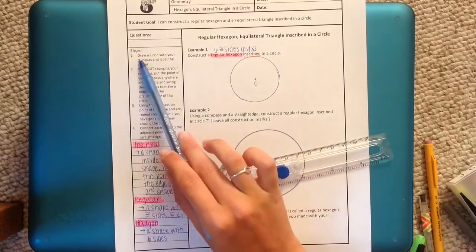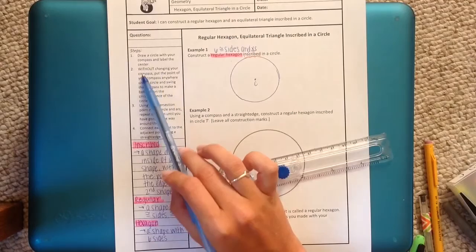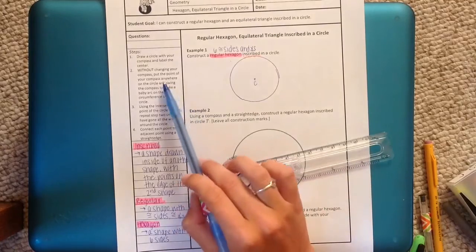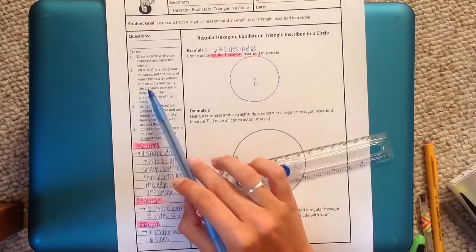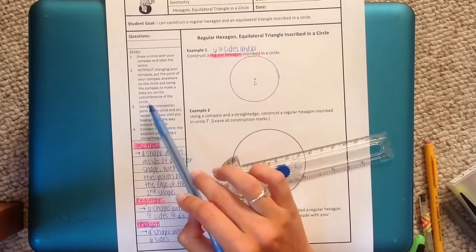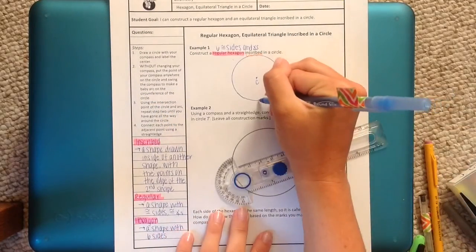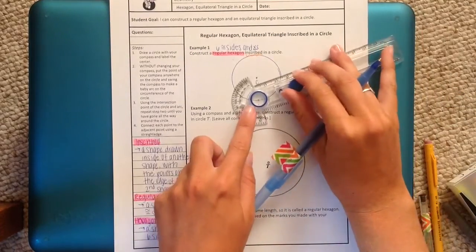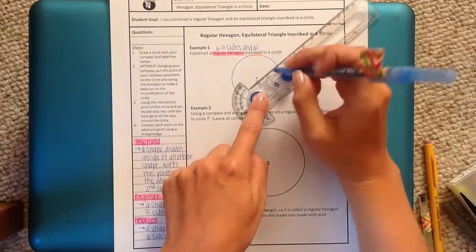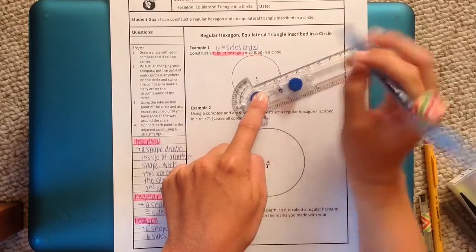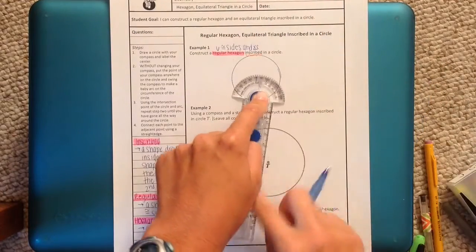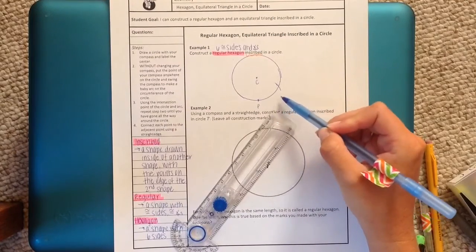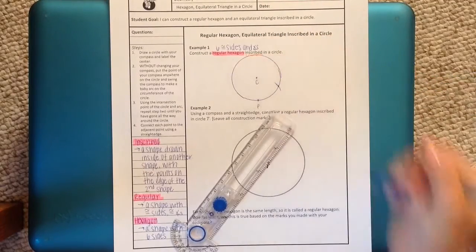So it says step one was to draw a circle with the compass and label the center. Then it says without changing your compass, meaning don't move the center or don't move the radius. Put the point of your compass anywhere on the circle and swing the compass to make a baby arc on the circumference of the circle. Okay, let's break that down. We need a point on our circle. I'll say P, P for point. I'm going to put my center on that point. And I'm going to swing a baby arc, meaning a small tiny little arc. This is just a little baby arc on the edge or the circumference of the circle. And so from there we have an intersection point.